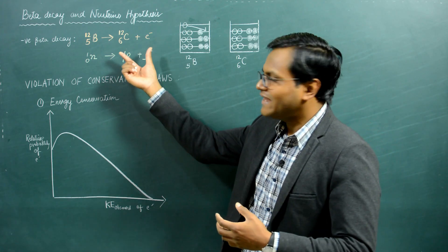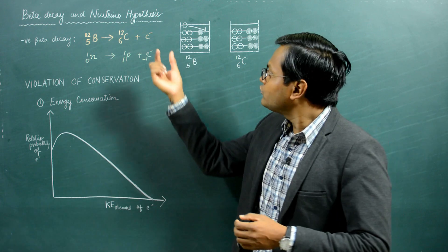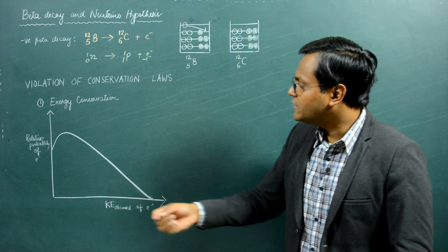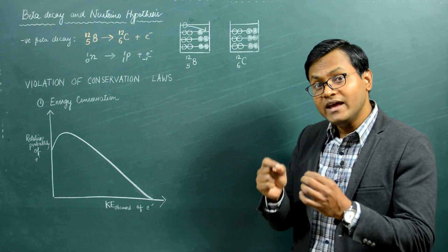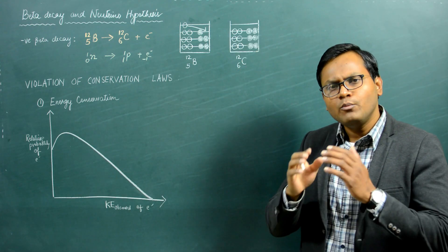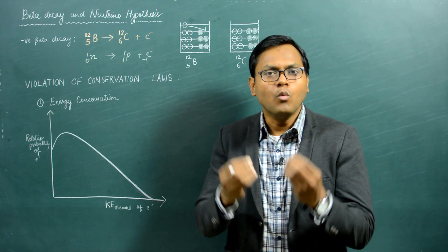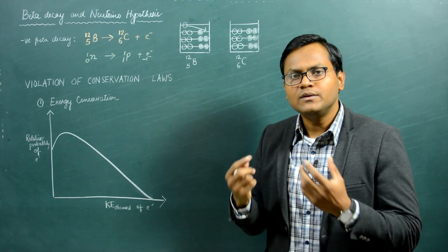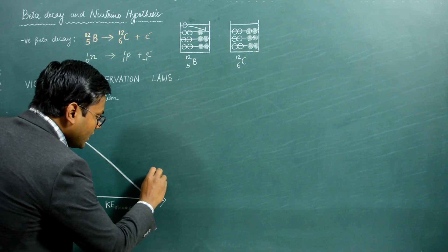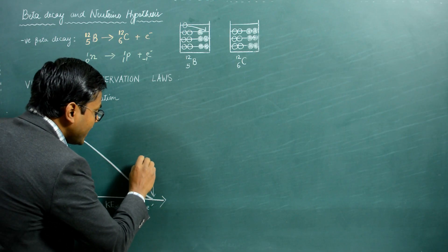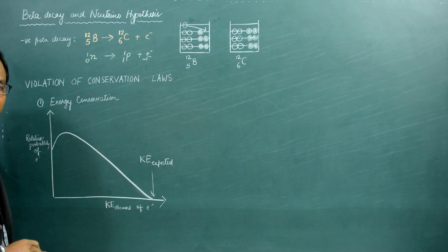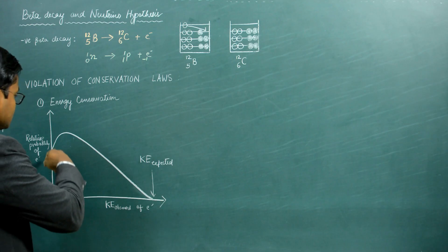This graph tells us the energy distribution of electrons when studying the same nuclear reaction over and over again. The x-axis represents the kinetic energy of the electrons and the y-axis represents the relative probability. The electrons seem to have kinetic energy that is not fixed but has a continuous distribution — in some cases zero kinetic energy, in rare cases maximum kinetic energy. Beta decay reactions, just like alpha decay reactions, are monokinetic in nature, meaning the kinetic energy of the emitted particle should have a fixed theoretically calculated value. This is the expected kinetic energy, but experimentally observed kinetic energies fell in a continuous range.